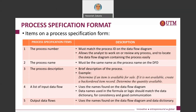The next item is the process name, which must be the same as the process name on your DFD. Third is the process description — a brief description, not the detailed logic yet, just an overview. For example: 'Determine if an item is available for sale; if not available, create a back-order record and determine the quantity available.' Also list the input data flows, using the data flow names found on your data flow diagram.